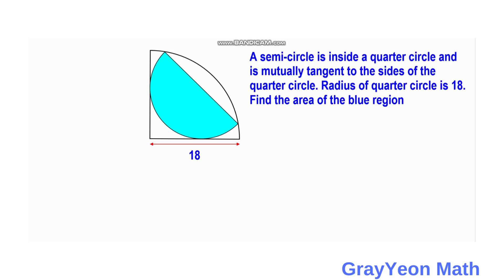Welcome to Grayon, we are asked to solve this problem. A semicircle is inside a quarter circle and is mutually tangent to the sides of the quarter circle. Radius of the quarter circle is 18. Find the area of the blue region.